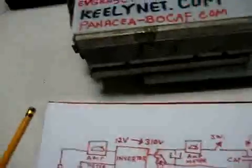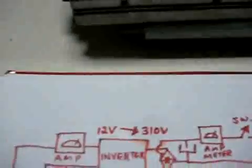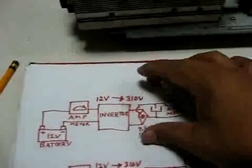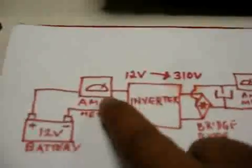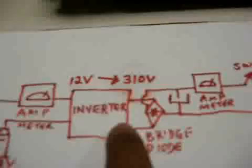Here I'll show you this diagram — actually two setups. One here is the conventional way and this is my own design. You can see here it's a 12-volt battery supply to an inverter. We put the ammeter here; the inverter takes it from 12 volts up to 310 volts AC.